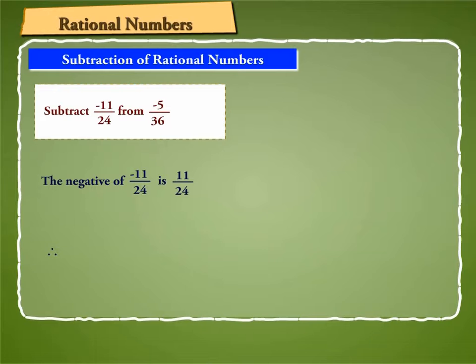Therefore, minus 5 by 36 minus minus 11 by 24 is equal to minus 5 by 36 plus 11 by 24 is equal to minus 10 plus 33 by 72 is equal to 23 by 72.